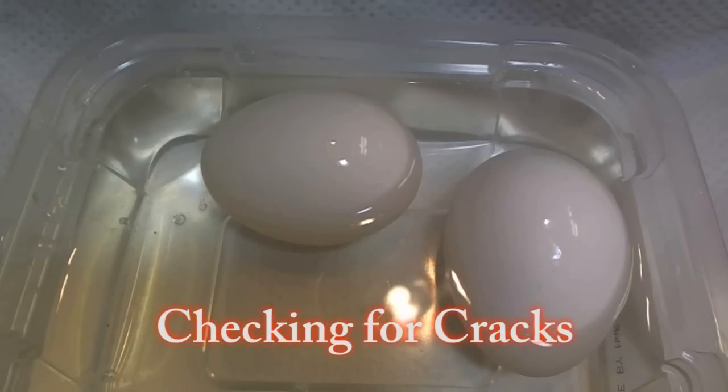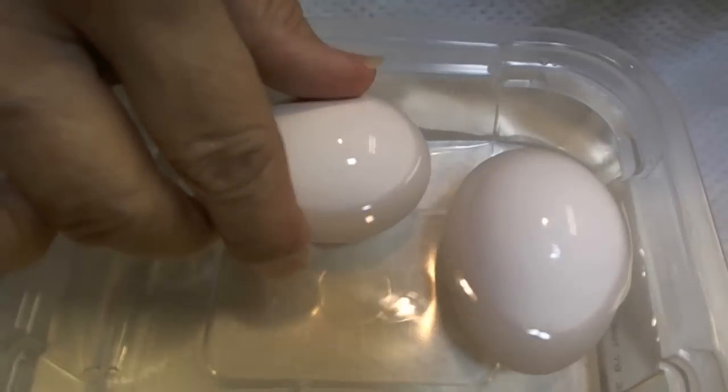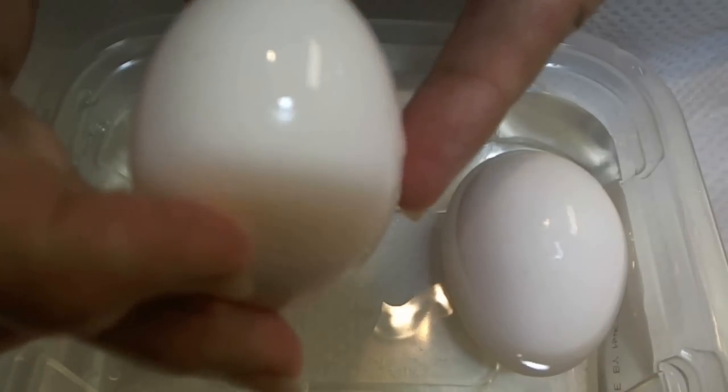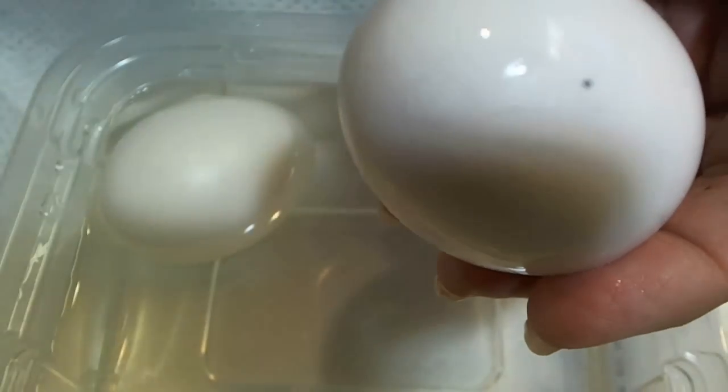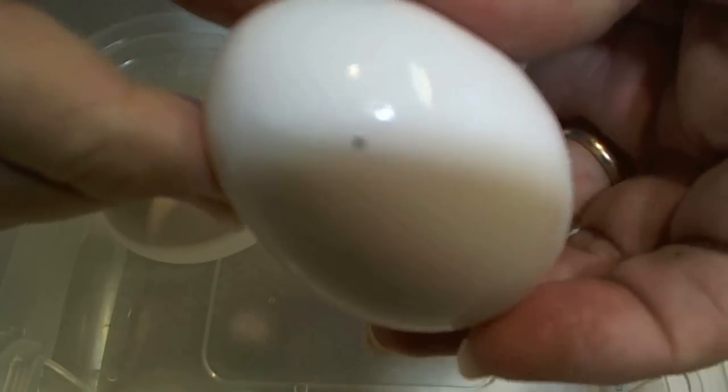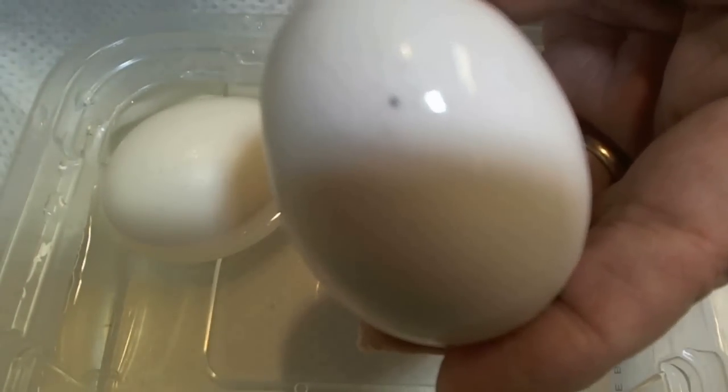Before I start cleaning my eggs, I usually put them into a little tub of water. The reason is I am looking for cracks in the eggs. When you put them in the water, if there are any cracks, they can be seen much better. You can see tiny little fracture looking lines. This egg would not be a good egg to work on.